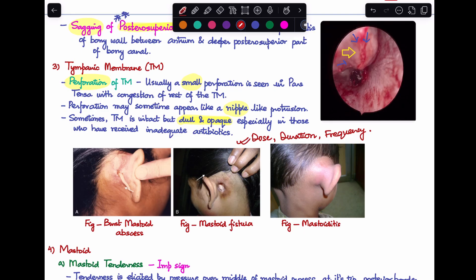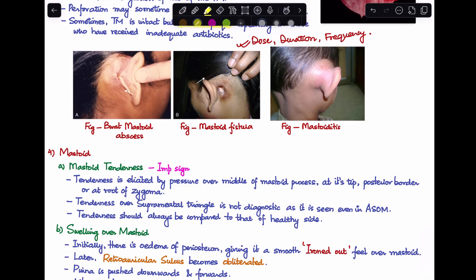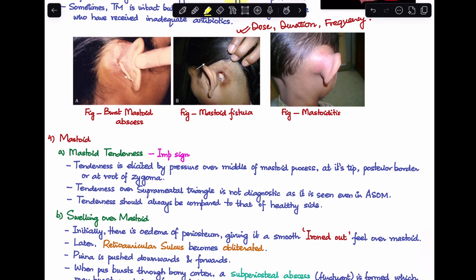Talking about mastoid, first important thing is mastoid tenderness. This is a very important sign. The tenderness will be elicited by pressure over the mastoid process at the tip and posterior border or the root of zygoma. Tenderness over the suprameatal triangle is not diagnostic as it's seen even in acute otitis media. Always compare with the healthy side.